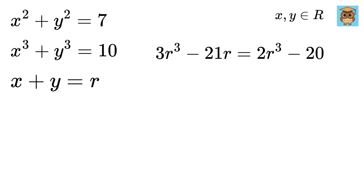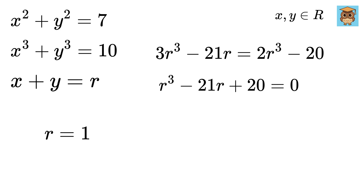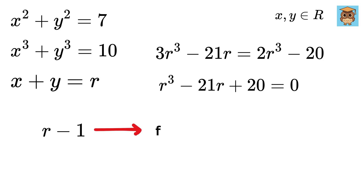On rearranging we get r cubed minus 21r plus 20 equals 0. We can clearly see that if we put r equals 1, then 1 minus 21 plus 20 equals 0. So r minus 1 is a factor of this equation.